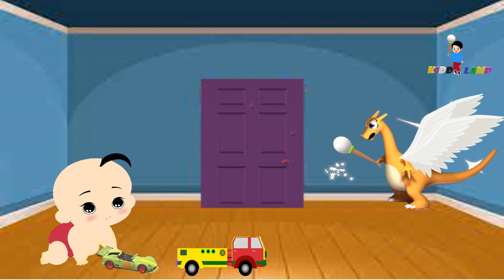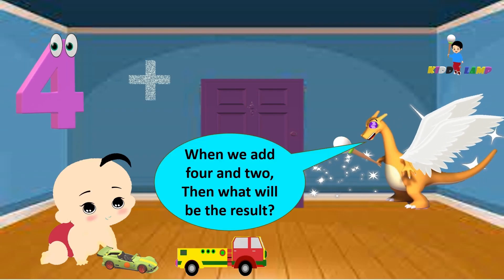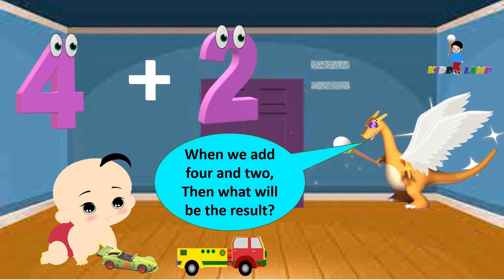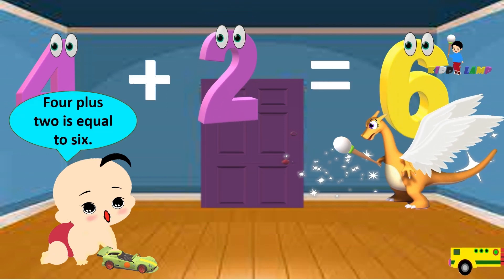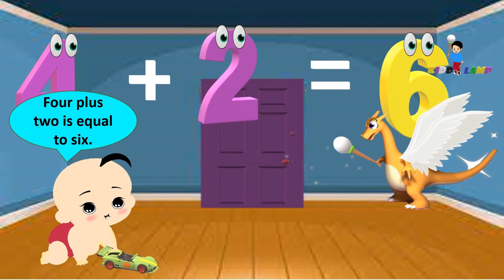When we add 4 and 2, what will be the result? 4 plus 2 is equal to 6.